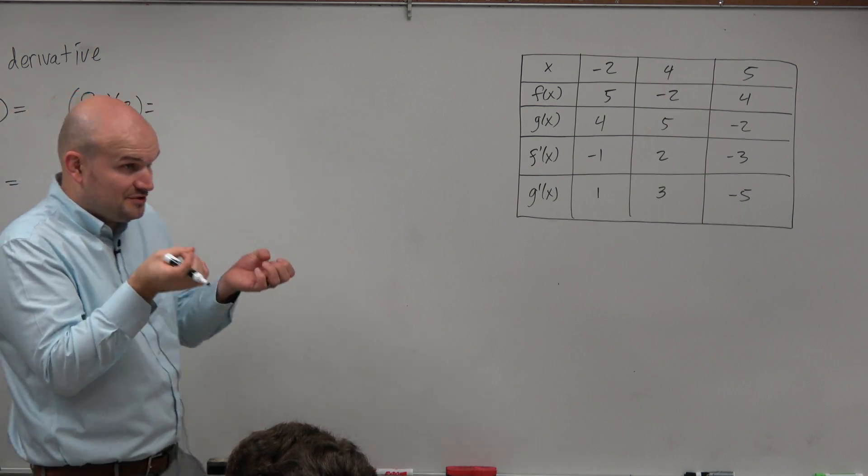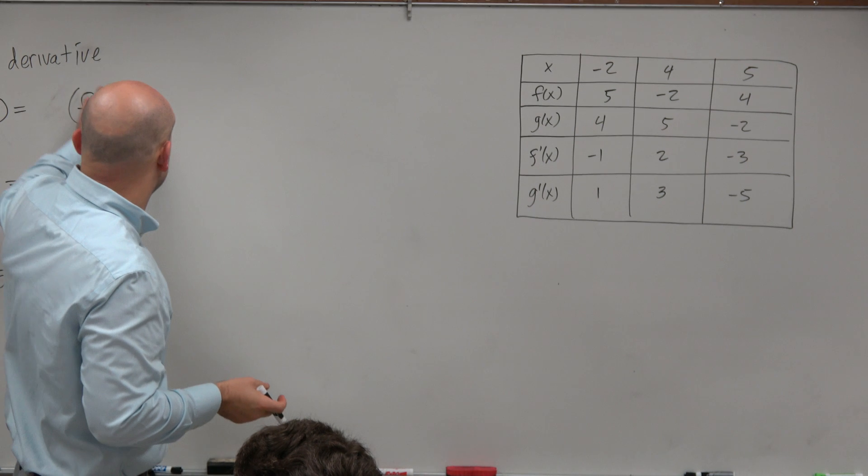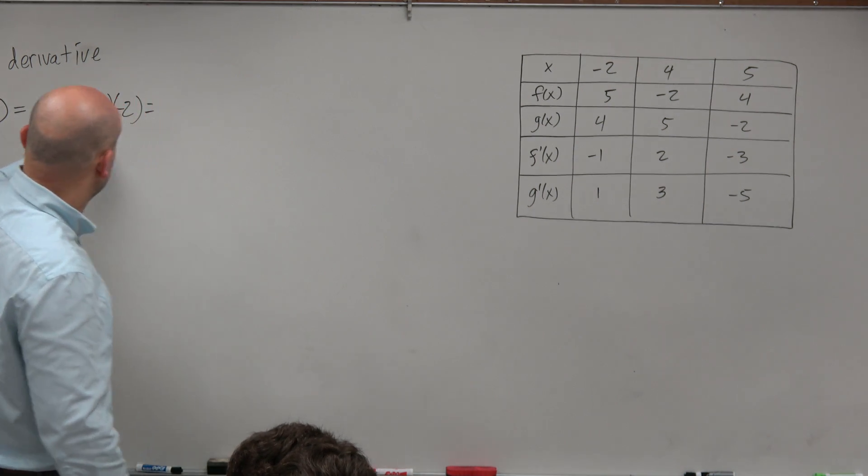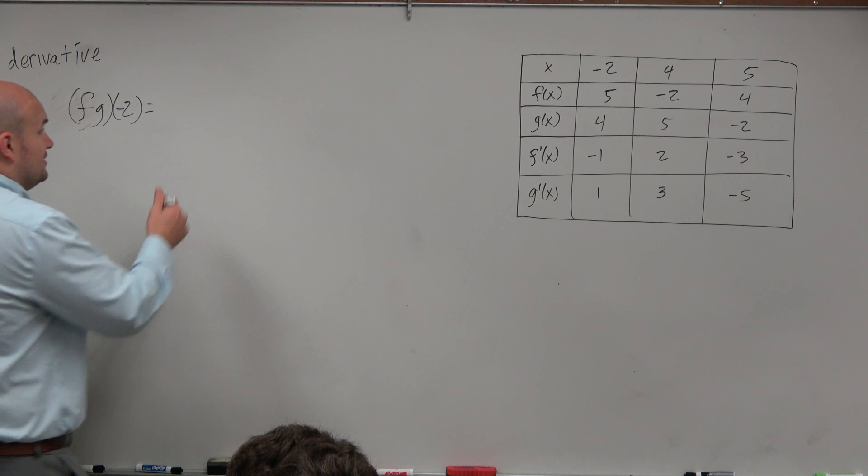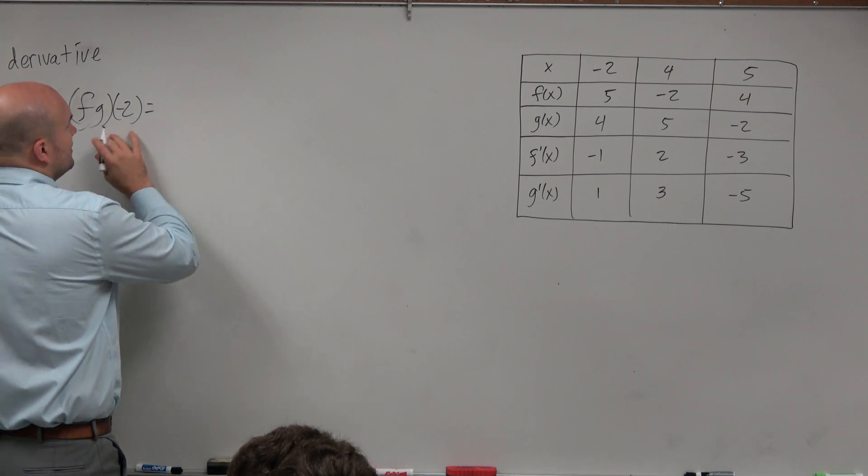So the first important thing we know is we have to multiply our functions because it's saying find the derivative of f times g of negative 2. So therefore, the first thing we want to do is go ahead and apply the chain rule.